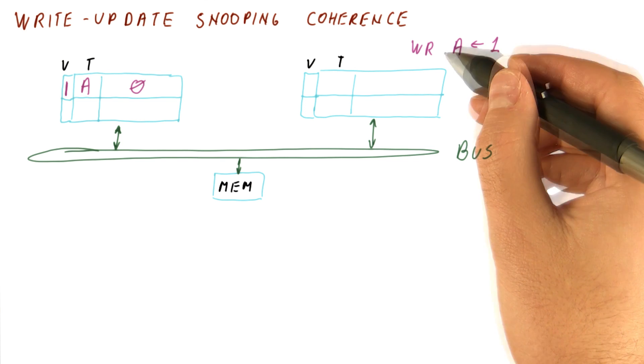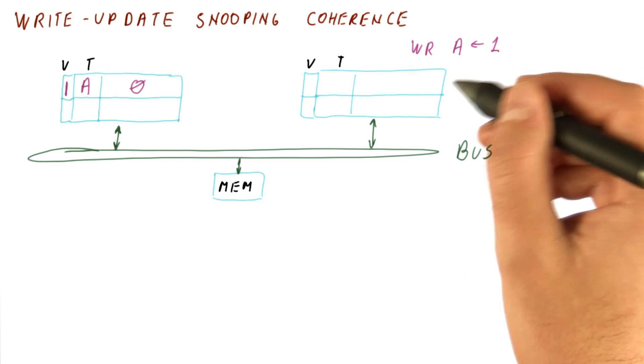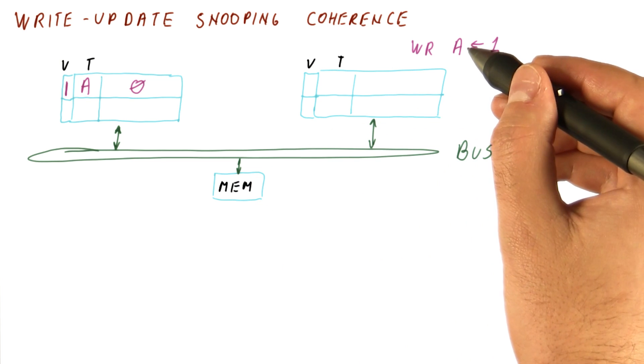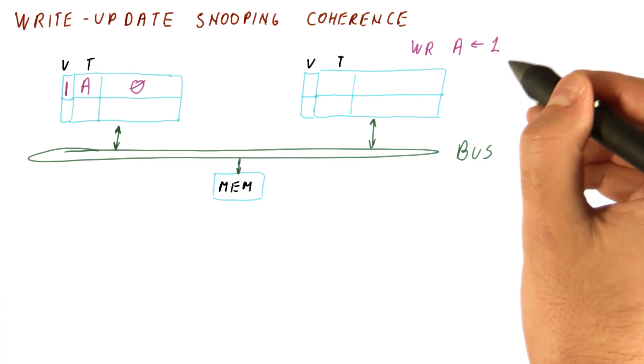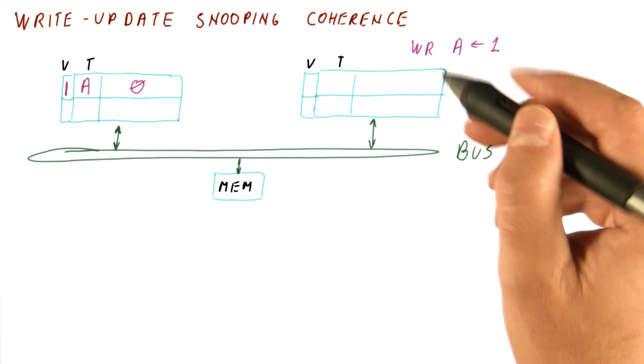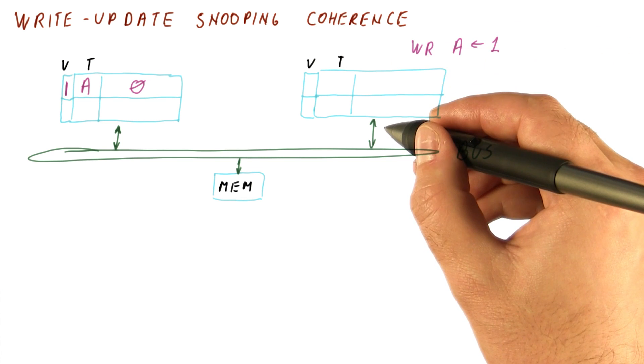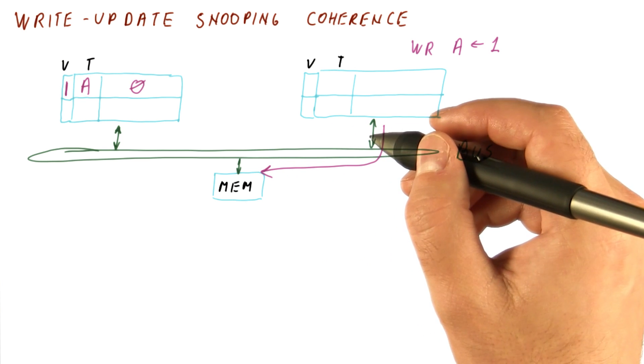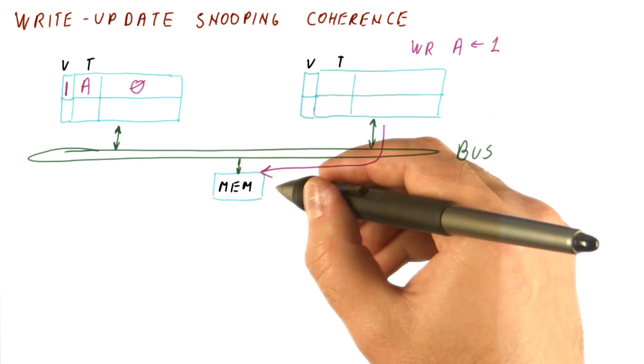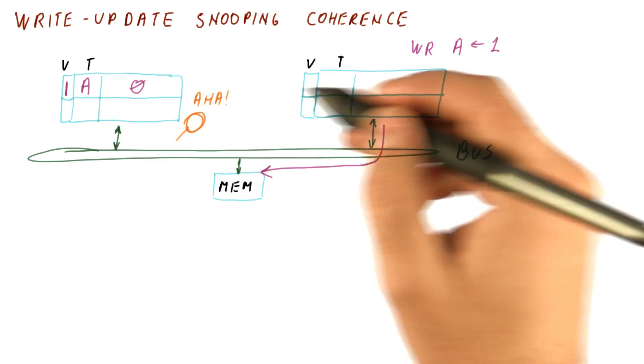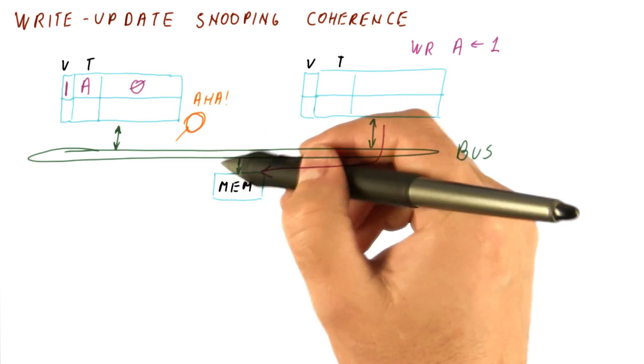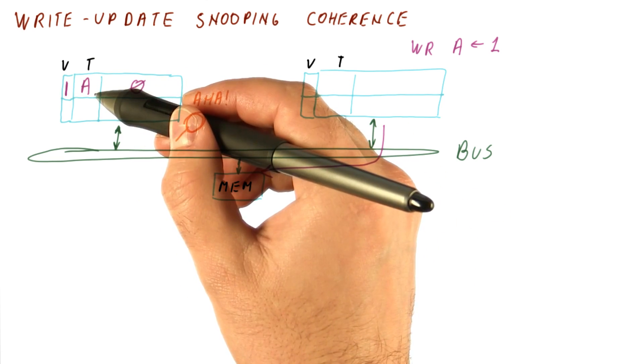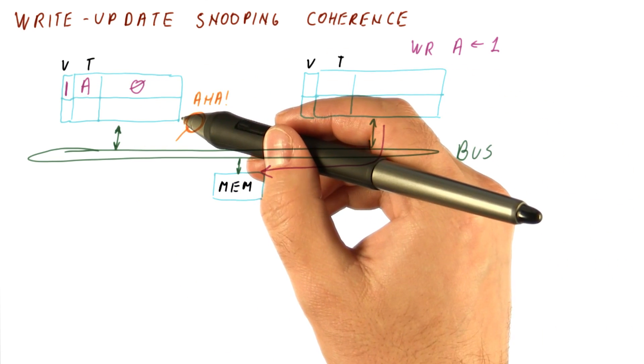We have a cache miss, but because it's a write, we send a request for the block along with an indication that it's a write, the value, and the address. This request goes to memory, and the memory writes one to A. But more importantly, this cache is monitoring the bus and sees that block A is being updated. It checks its internal state, sees that it has block A, and then takes the value that is being written.